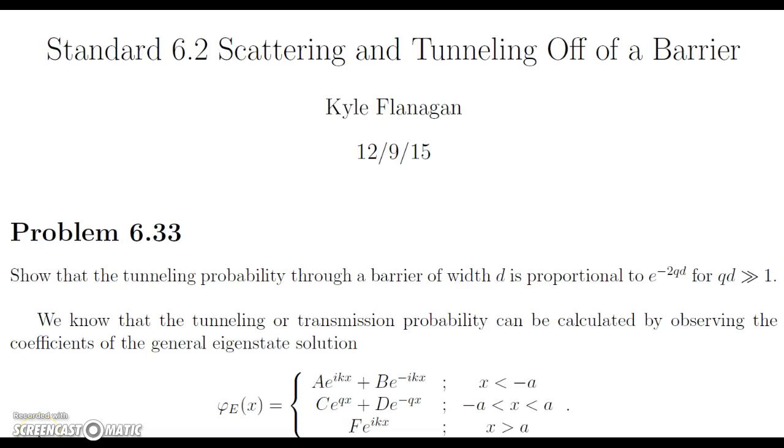Hello, today we're going to be doing Standard 6.2, which is on scattering and tunneling off of a barrier. We're going to be doing problem 6.33 out of McIntyre, which states to show that the tunneling probability through a barrier with width d is proportional to e to the negative 2qd for qd much greater than 1.